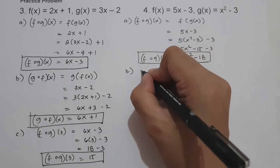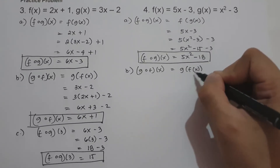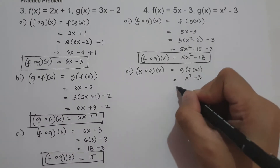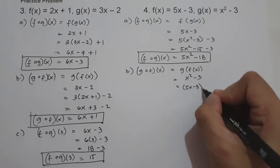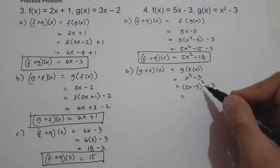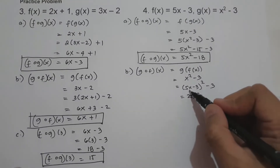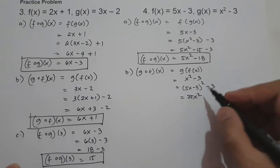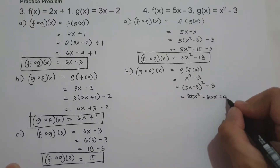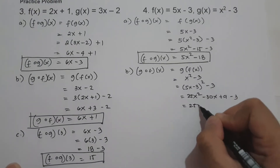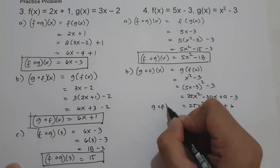On letter b, let us have g circle of f of x, and this will be g of f of x. The value of g is x squared minus 3, and the value of x is f of x, which is 5x minus 3. So we have 5x minus 3 raised to 2 minus 3. Expanding the square of the binomial: 5x times itself is 25x squared, 5x times negative 3 gives negative 30x, and negative 3 times itself is positive 9 minus 3. So we get 25x squared minus 30x plus 6, and this is g circle of f of x.